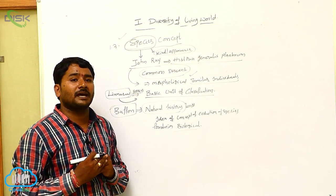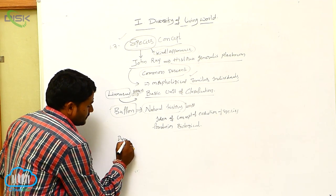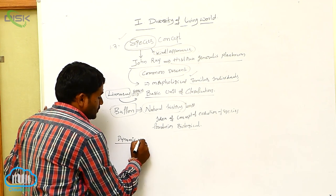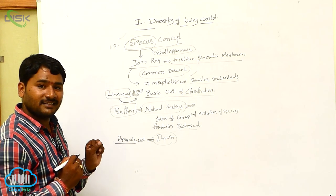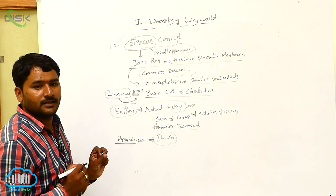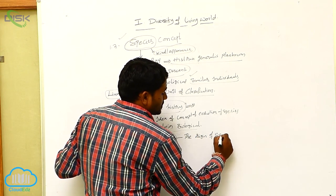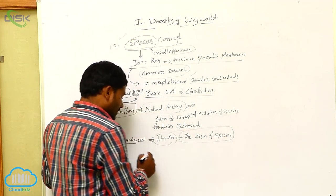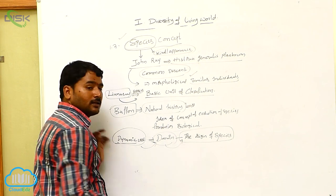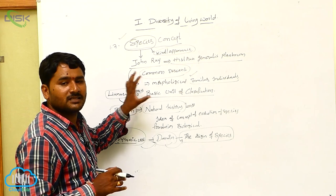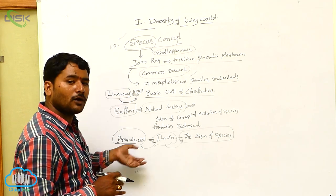Later, species became a dynamic unit. Dynamic means which is not constant. So species became a dynamic unit by Darwin, in his book The Origin of Species. So this is the history of the word species — definitions given by Linnaeus, Buffon, and how Darwin used that word.